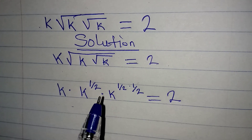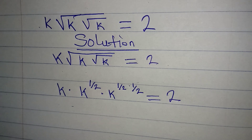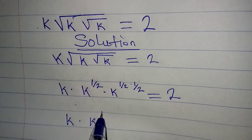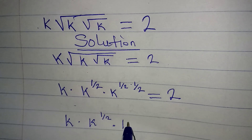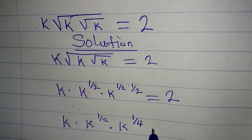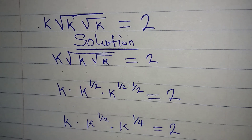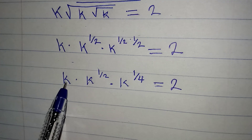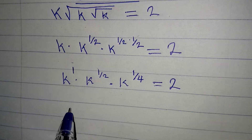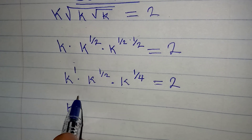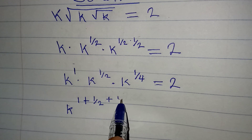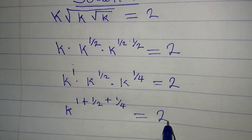Now we multiply the powers. We have k multiplied by k to the power of 1/2, multiplied by k to the power of 1/4. Since we have the same base, we can add the powers. So we pick one base and the exponent will be 1 plus 1/2 plus 1/4, and this equals 2.